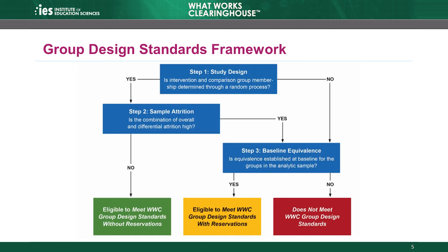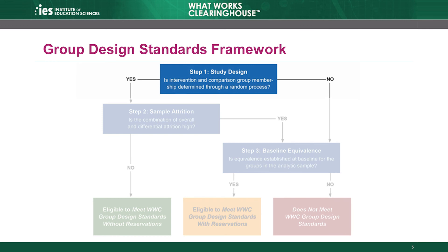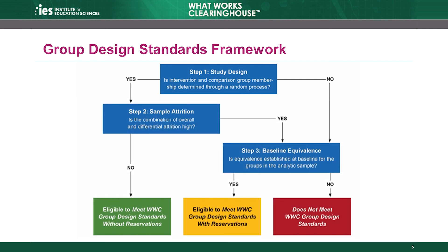The WWC group design standards evaluate studies using the framework illustrated here. This module discusses the first point in the framework, the question in the study design box — the design of the study and whether it used a valid randomization process to form the intervention and comparison groups. Only RCTs with valid randomization can receive the highest study rating. Next, in this module, we'll talk about what the WWC considers to be a valid random process. Later modules will discuss the other components included in this framework.